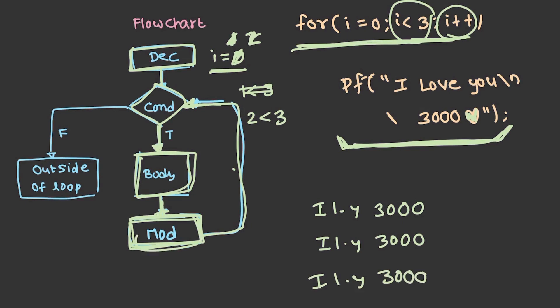2 is still less than 3 and it will proceed further and one more time it will be printed, and the modification happens. Now the i value tends to become 3. Whether 3 is less than 3? It is false, so it comes outside of the loop and the printing ends.